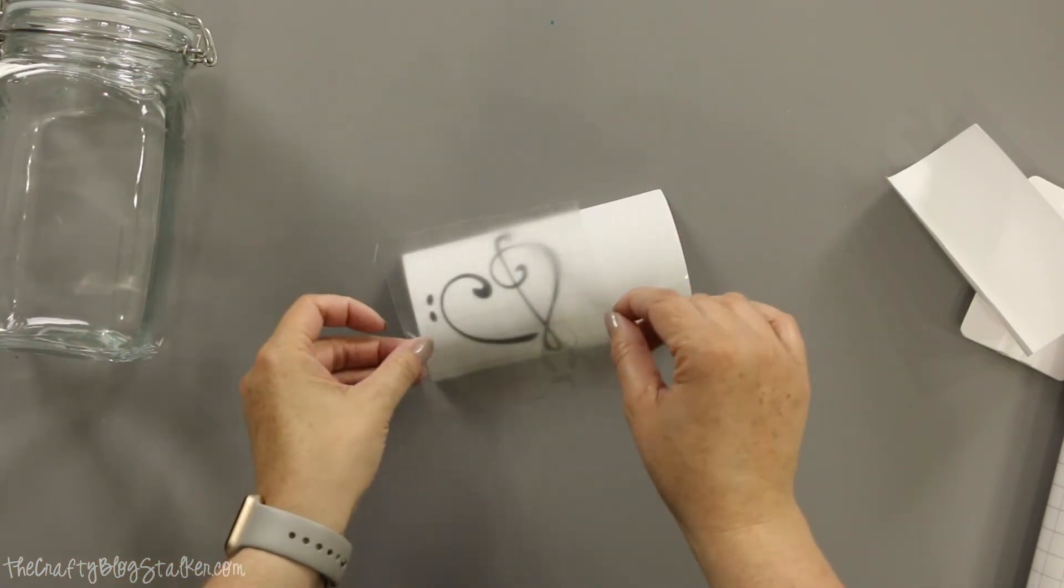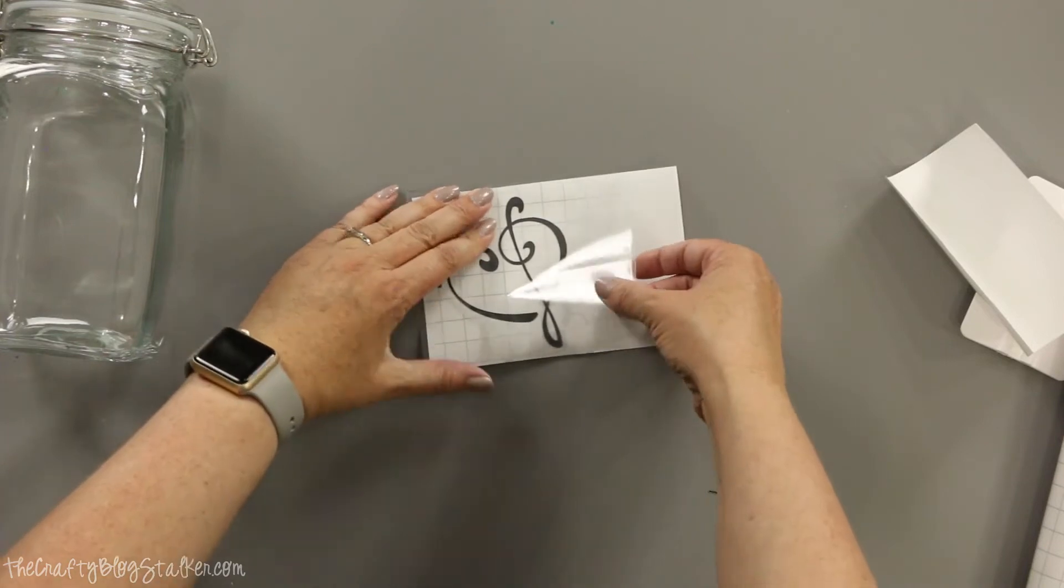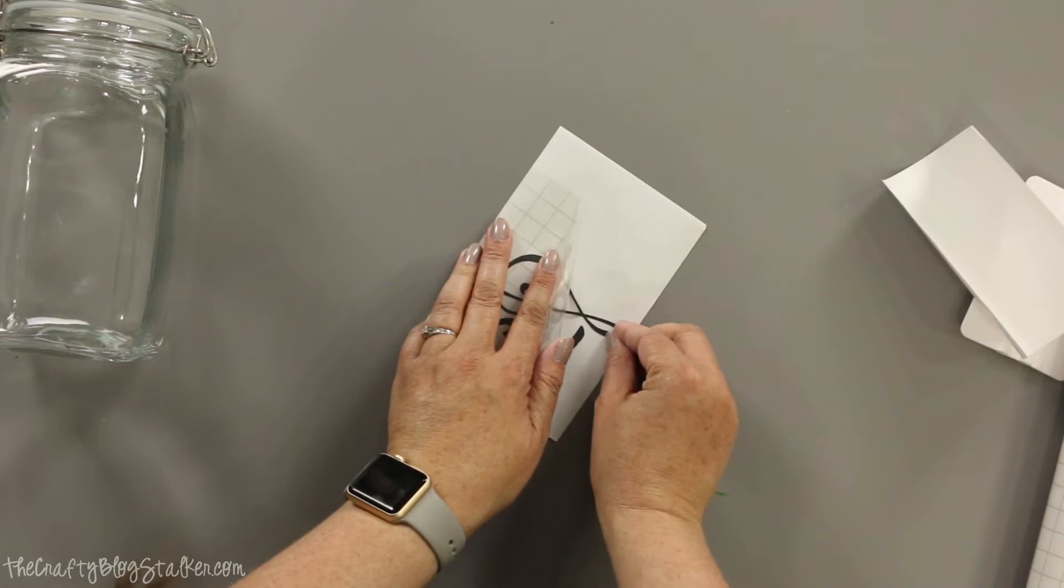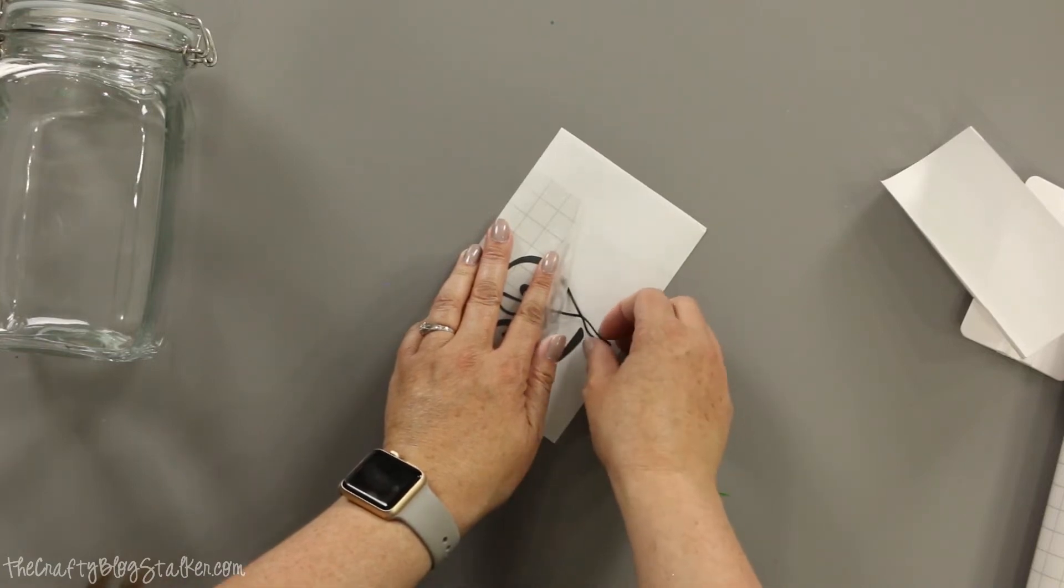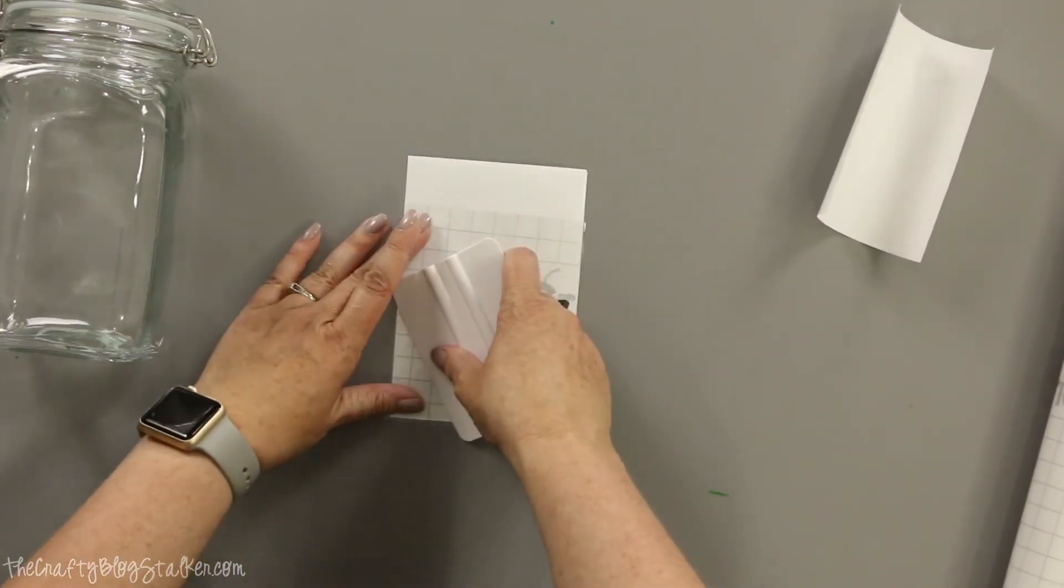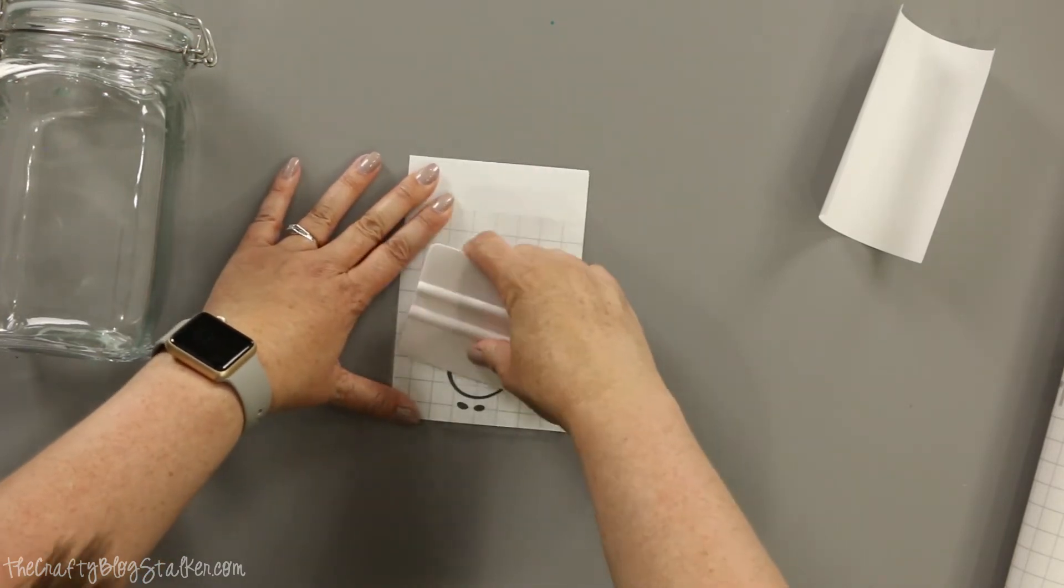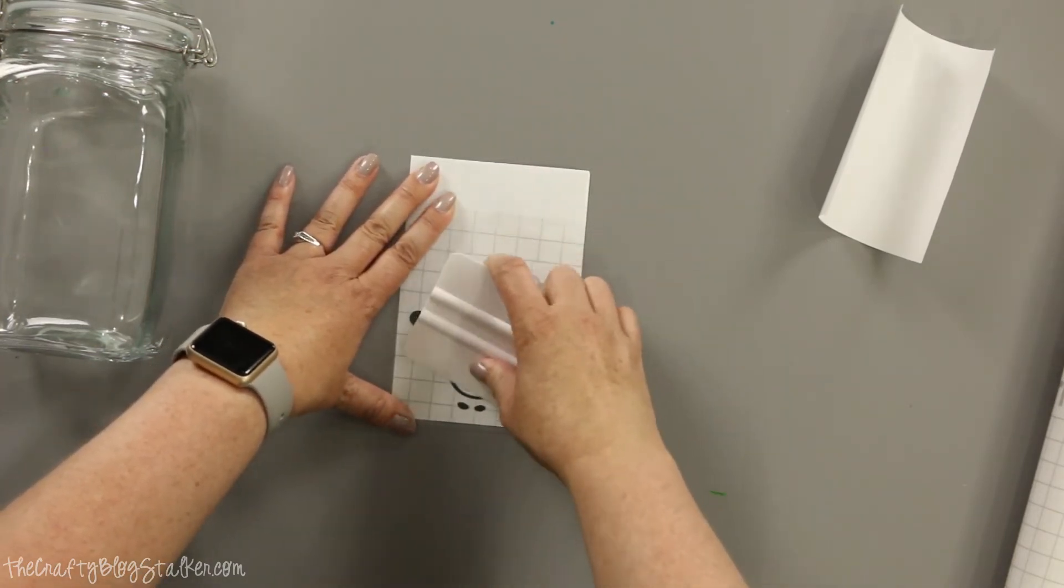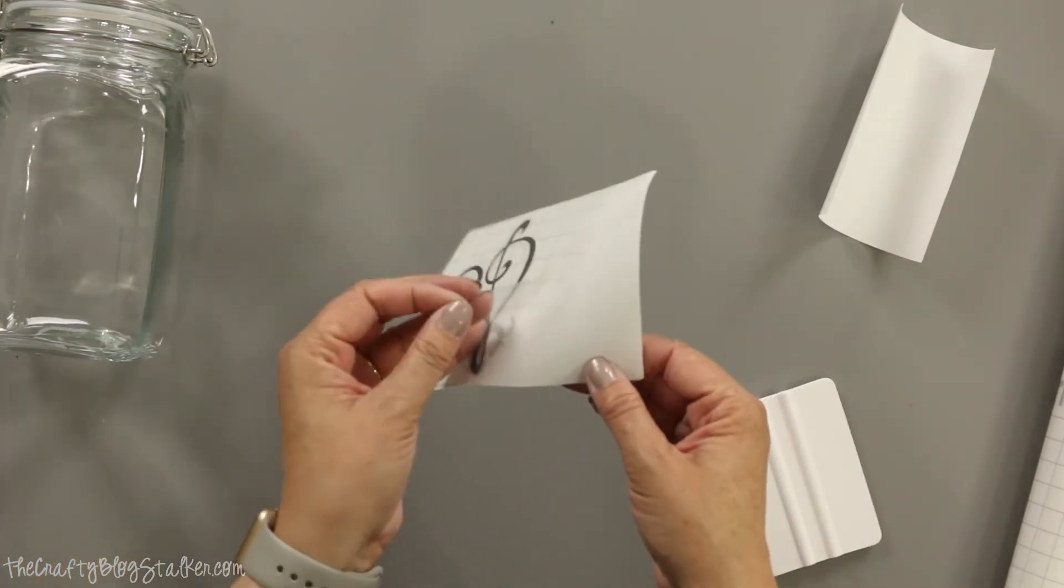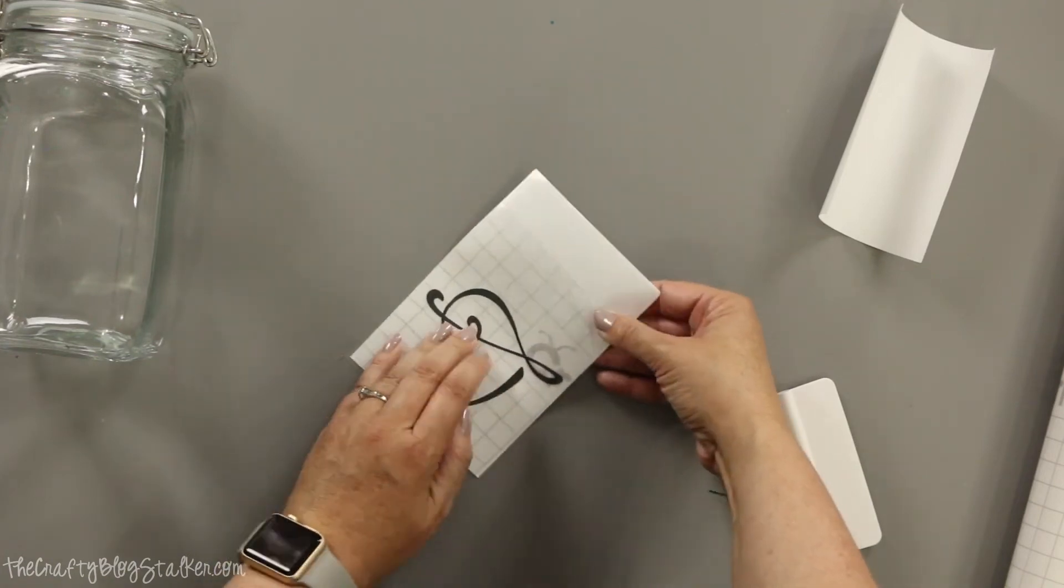This is the transfer tape. I'm going to apply it to my little treble clef heart here that I just made. That's a little bubble, so I'm just going to straighten that out just a little bit. There we go. And I'm going to use my scraper. Because now I want the vinyl to stick to my transfer tape. Okay, so now I'm just going to remove the paper backing.